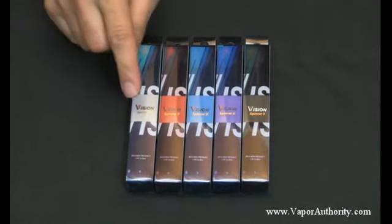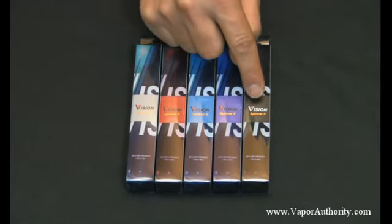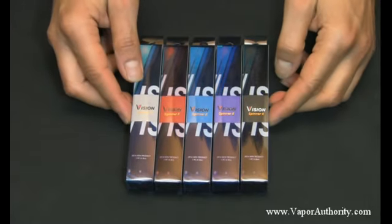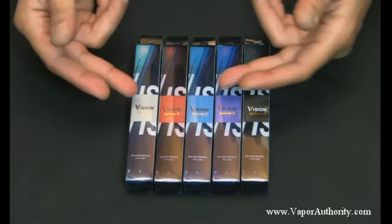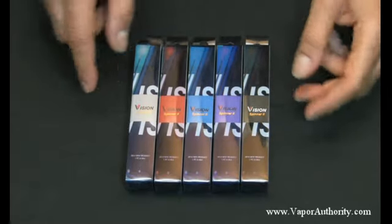The battery comes in five different colors: stainless steel, red, blue, purple, and black. Vision smartly designed the packaging so you can tell the color of the battery inside based on the color of the inner packaging.